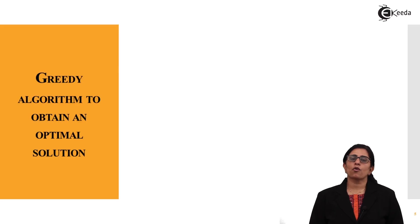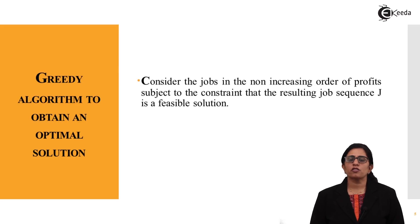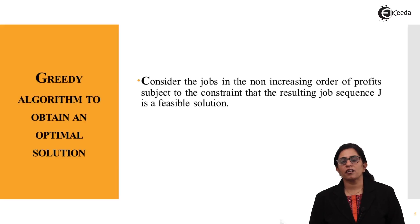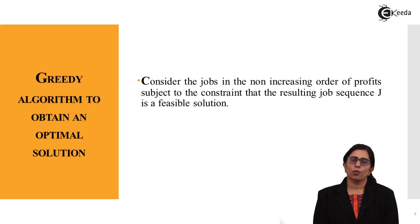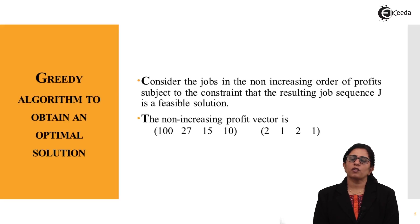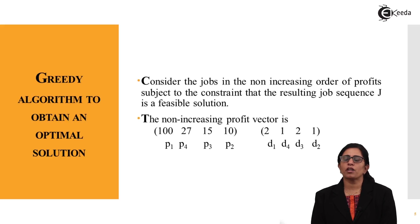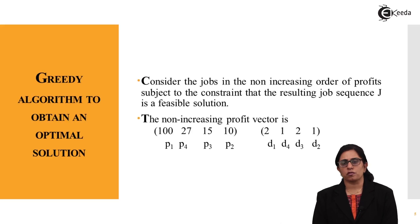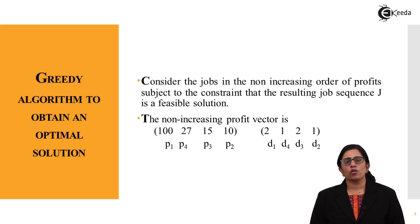So the greedy algorithm to obtain the optimal solution considers the jobs in non-increasing order of their profits, subject to the constraint that the resulting job sequence J is a feasible solution. The non-increasing profit order gives us P1=100, P4=27, P3=15, P2=10, with deadlines rearranged accordingly as D1=2, D4=1, D3=2, D2=1.